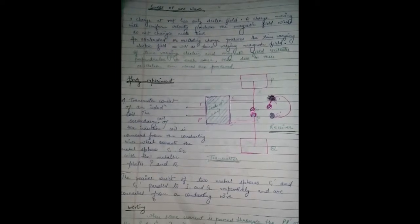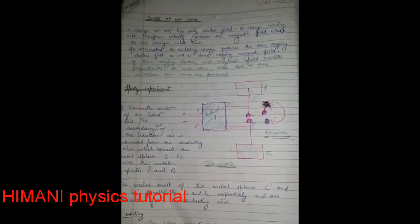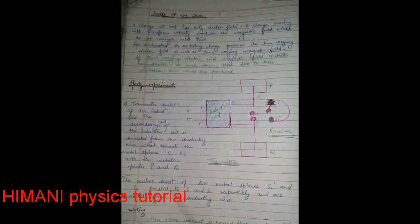So let's see what EM waves are. A charge at rest has only electric field. A charge moving with uniform velocity will also produce a magnetic field, which does not change with time. An accelerated or oscillating charge produces a time-varying electric field as well as a time-varying magnetic field. When these time-varying electric and magnetic fields oscillate perpendicular to each other, the oscillation produced is our EM waves.